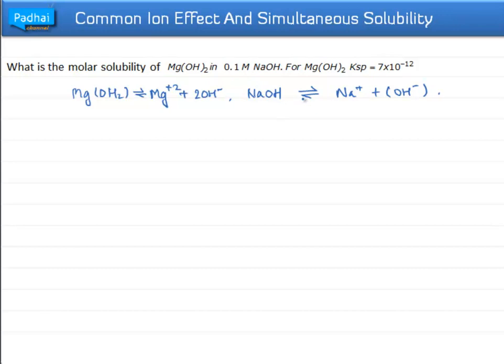We have been given that the concentration of NaOH was 0.1 molar. In case of Mg(OH)2, it would be S and 2S.